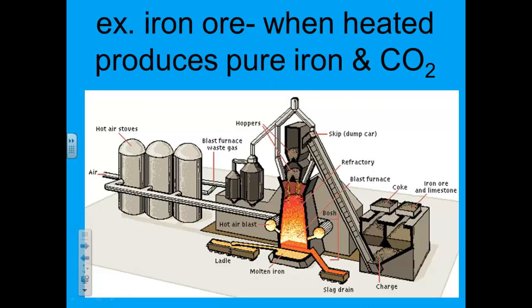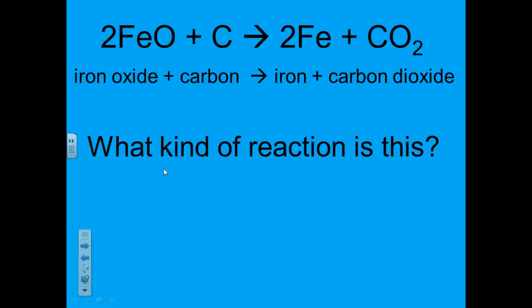This process works because iron has the chemical property of bonding to oxygen less strongly than to carbon. Here's the graphic picture of separating iron from its oxygen, producing pure iron and carbon dioxide. Here's the chemical equation — we talked about chemical equations in the last video. We have iron oxide, which is 2Fe and O (iron oxide), plus carbon. It reacts, shown by the arrow, into iron and carbon dioxide.